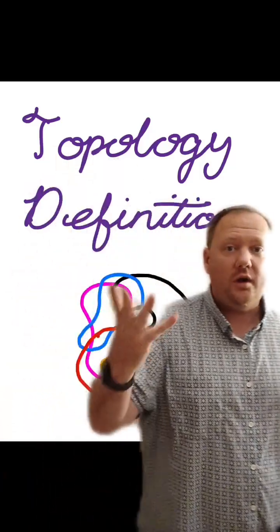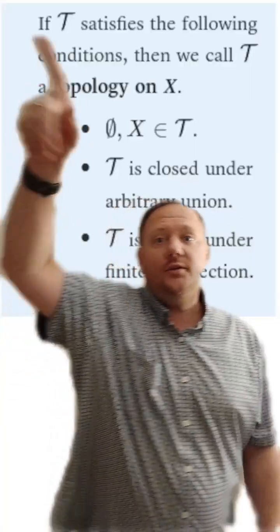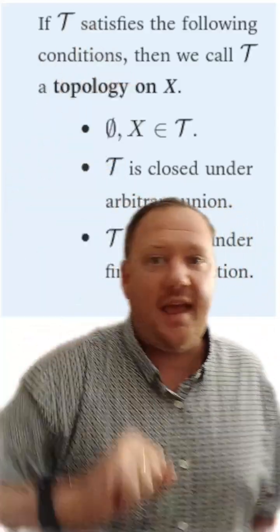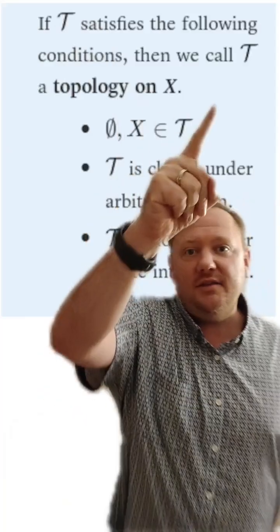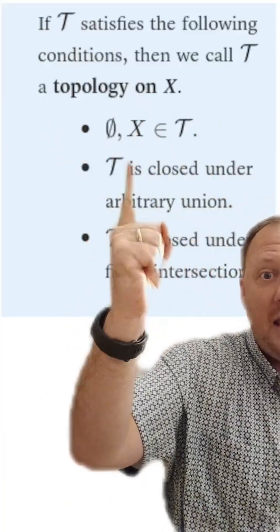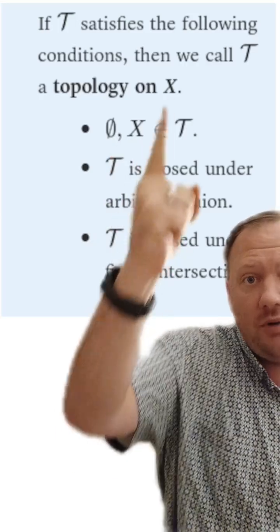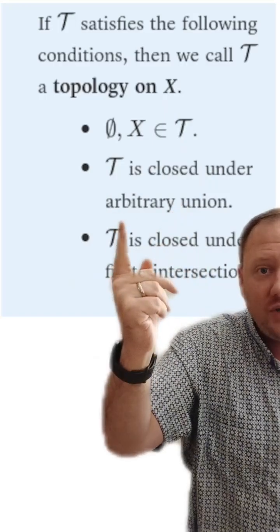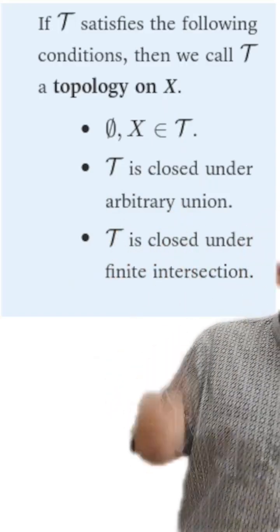All right, now we can finally define what a topology is. Again, assume that T is some subset of the power set of a set X, and now we're going to say what it is for T to be a topology on X. It must both contain the empty set, the universal set X, and it must be closed under arbitrary unions and finite intersections.